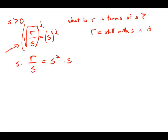Now I want to get r by itself, so I'm just going to multiply both sides by s. I get r equals, and s squared times s is s cubed. So r equals s cubed, and this is answer choice d.